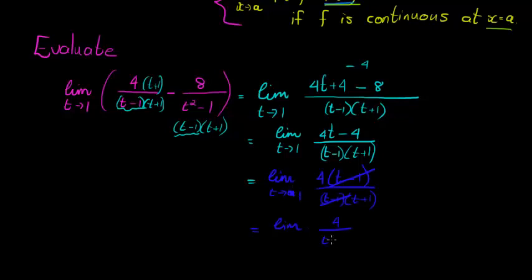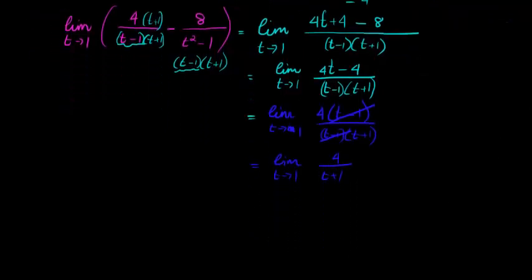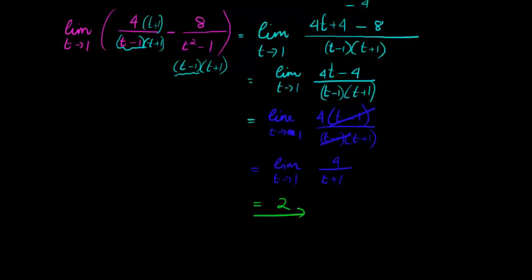And now we can see, oh that's great, now we can substitute the t with the 1 because when I do substitute that I get a 2 in the denominator and not a 0. So I get 4 over 2 which is simply 2.